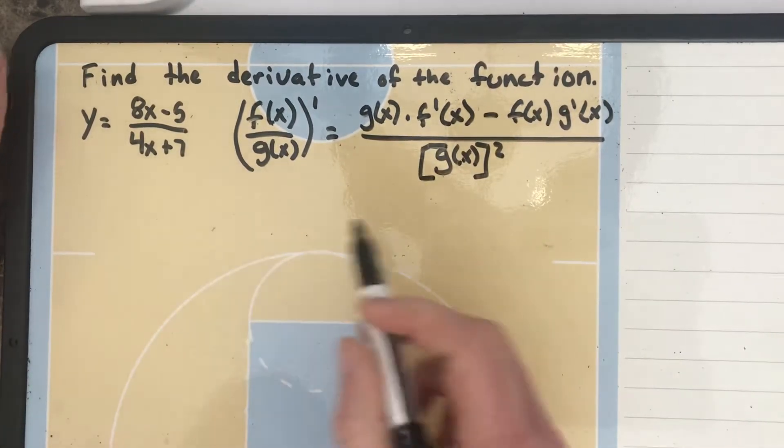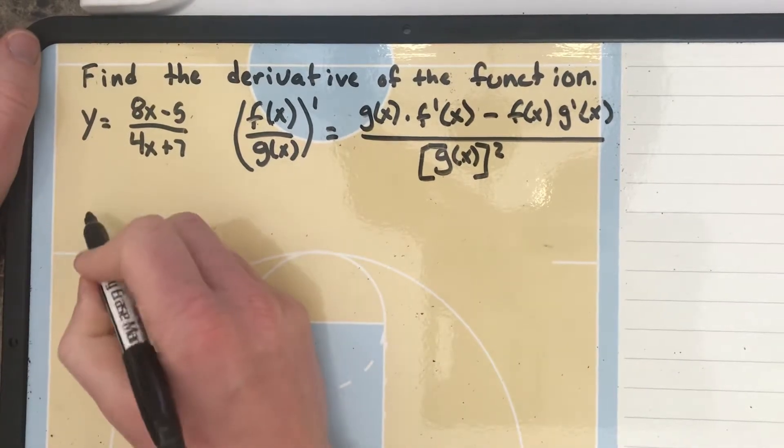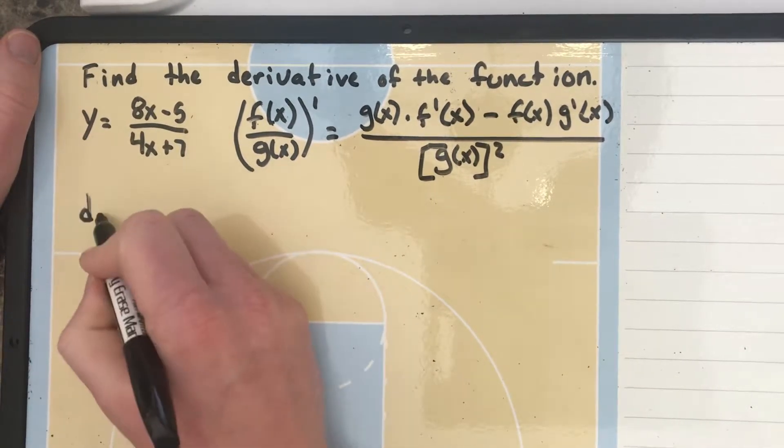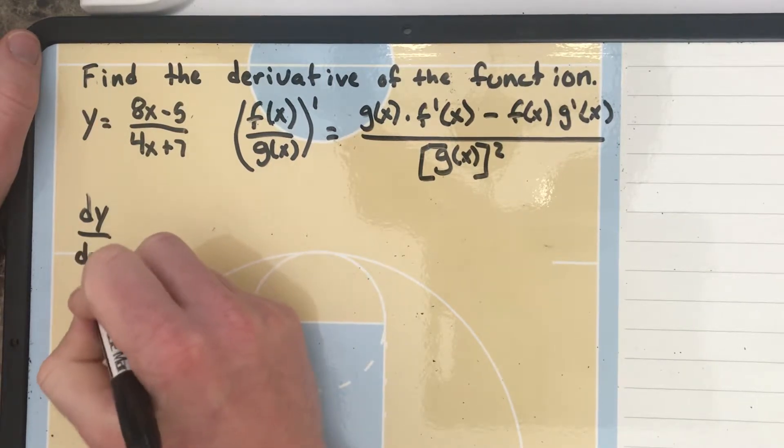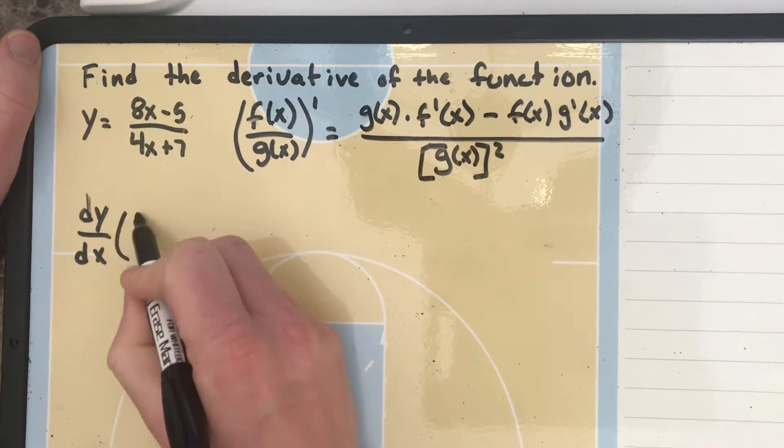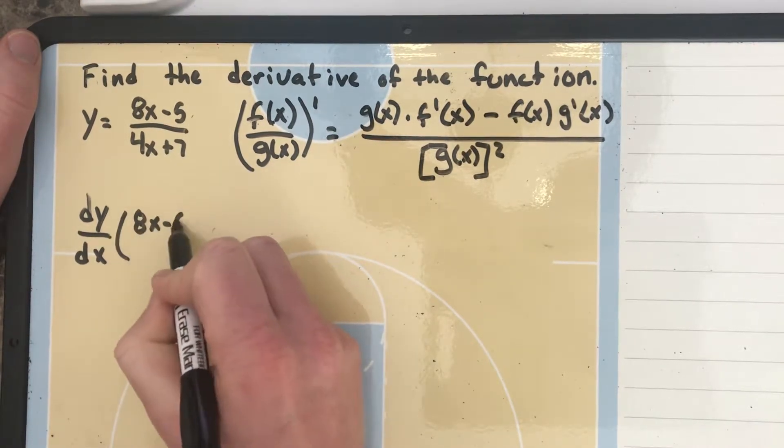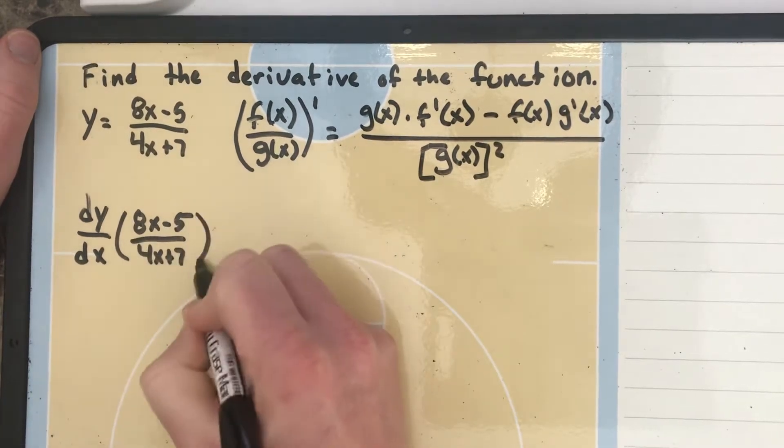Let's start with g of x first. We'll write that. So we're going to say dy with respect to dx of this function here, 8x minus 5 over 4x plus 7, is going to equal...